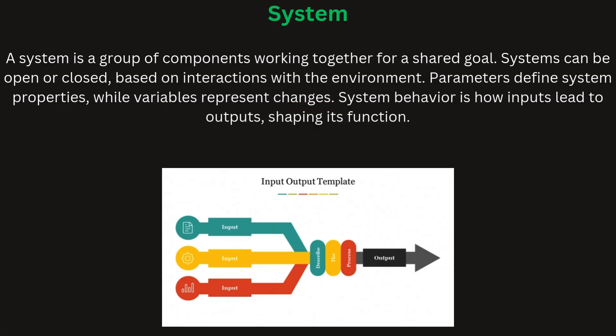A system refers to a set of interconnected components working together to achieve a common goal. In industrial management, a system could be an organization, a production unit, or even a supply chain. Systems can be classified into open or closed systems depending on how they interact with the environment. Parameters define the system's properties, while variables represent the system's changing aspects, and behavior reflects how it responds to inputs and produces outputs, shaping its overall performance.